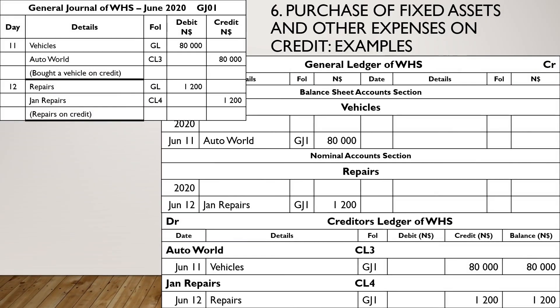And lastly, purchase of fixed assets and other expenses on credit. You debit the fixed asset — in this case Vehicles — and the details is the creditor's name R2World. Credit the creditor R2World and the details is Vehicles. Again: debit Repairs (the expense bought on credit), details the creditor Jan Repairs, and credit the creditor Jan Repairs with details Repairs.